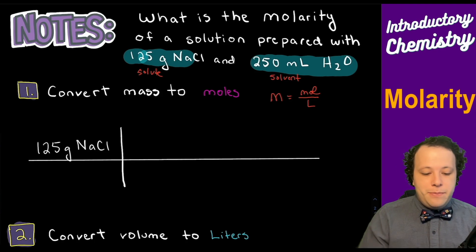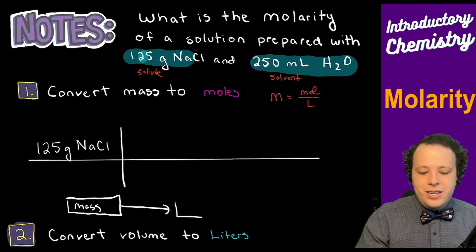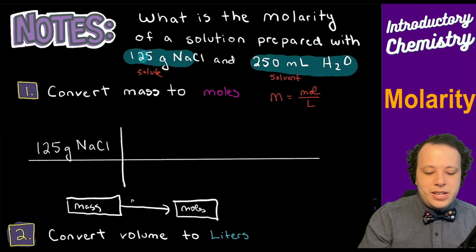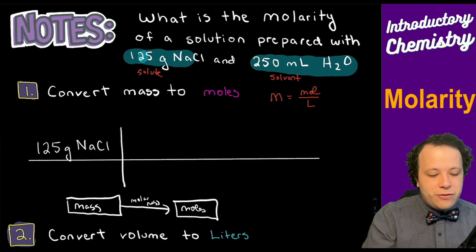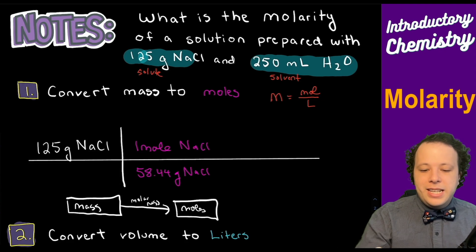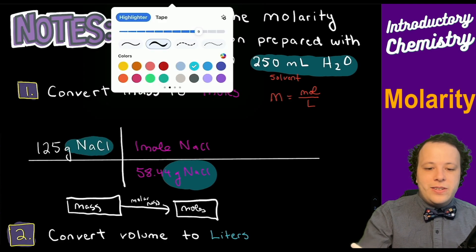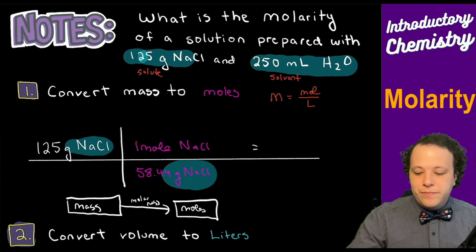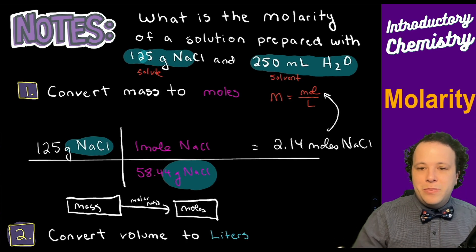In order to cancel grams and convert mass to moles, we need to use molar mass. Looking up the molar mass for sodium chloride, one mole of NaCl is equivalent to 58.44 grams. Grams of NaCl cancels grams of NaCl, leaving us with moles. So we get 2.14 moles of NaCl, which will be plugged in as our solute.